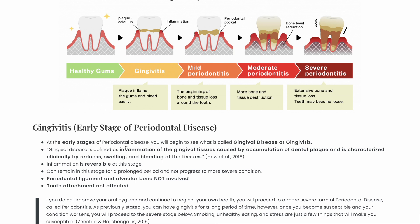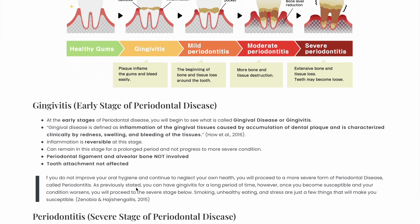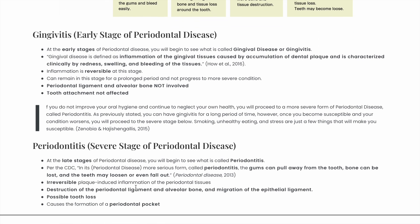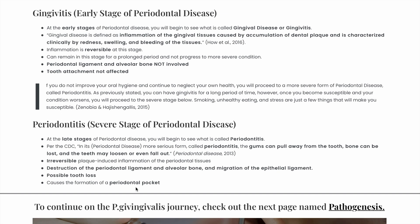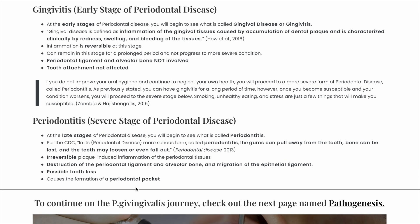Gingivitis is considered the early stage of periodontal disease, and at this stage inflammation is reversible. Periodontal ligaments and alveolar bones are not involved, and tooth attachment is not affected. However, if your oral hygiene continues to be neglected, combined with your body becoming more susceptible, you will eventually get periodontitis. Susceptibility can come from being stressed, eating unhealthy, or even smoking.